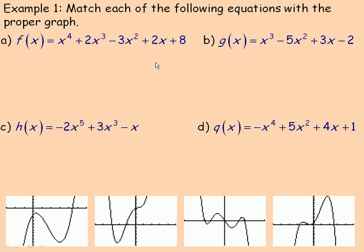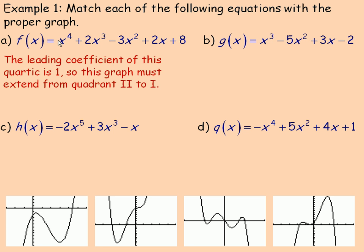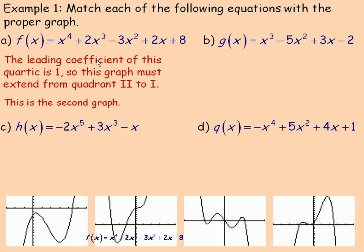In this example, we're asked to match each of the following equations with the proper graph, using the leading coefficient and the degree — the general shape of each quartic, cubic, parabola, or straight line. The leading coefficient is one and it's quartic — x to the power of four — so it must go from the second quadrant to the first. That's why this would have to be the second graph: it starts in the second quadrant and ends in the first quadrant.